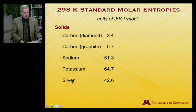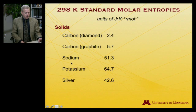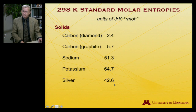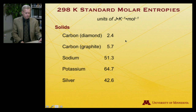We also have some metals — not the atoms, but the solid forms: sodium metal, potassium metal, and silver metal, with entropies of 51.3, 64.7, and 42.6 joules per Kelvin per mole. These are about tenfold larger than is the case for carbon.